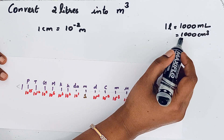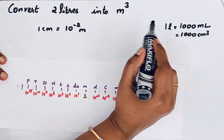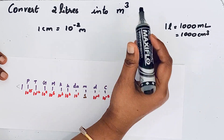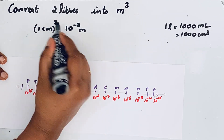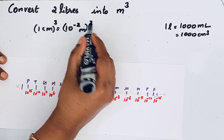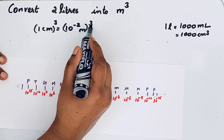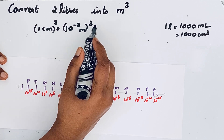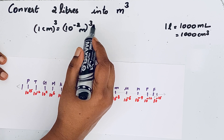One liter is equal to 1000 centimeter cube, and we want the answer in cube, so let us cube it. Cubing gives 10⁻² × 10⁻² × 10⁻², which gives 10 raised to minus 6.